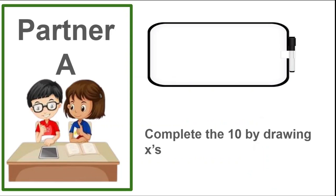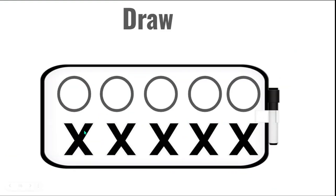I have five circles the five-group way. Partner A, draw X's on the board until you have 10 objects on the board. Does your drawing look like this?